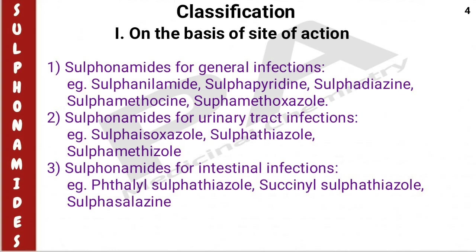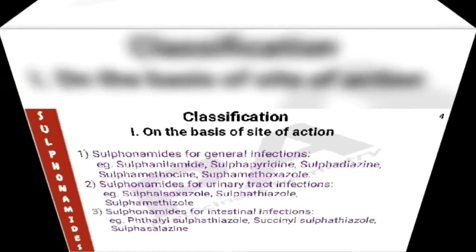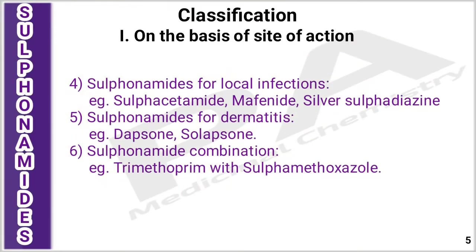The third type is sulfonamides for intestinal infections — example: thalylsulfathiazole. The fourth type is sulfonamides for local infections — examples are sulfacetamide, mafenide, and silver sulfadiazine. The fifth type is sulfonamides for dermatitis — examples are dapsone and sulapsone. The sixth type is sulfonamide combinations — trimethoprim combined with sulfamethoxazole.